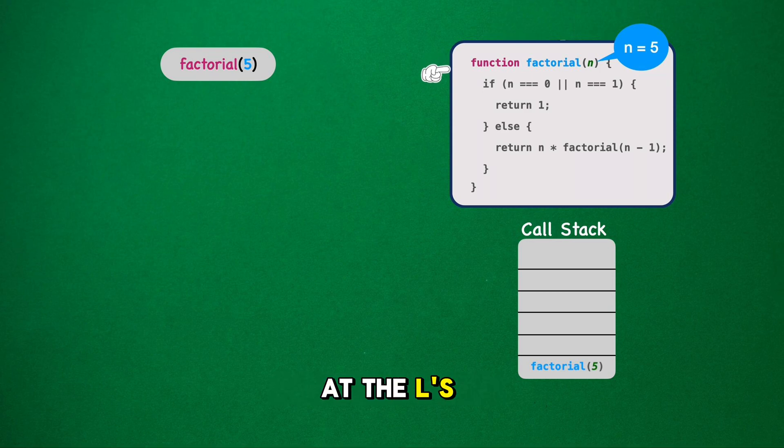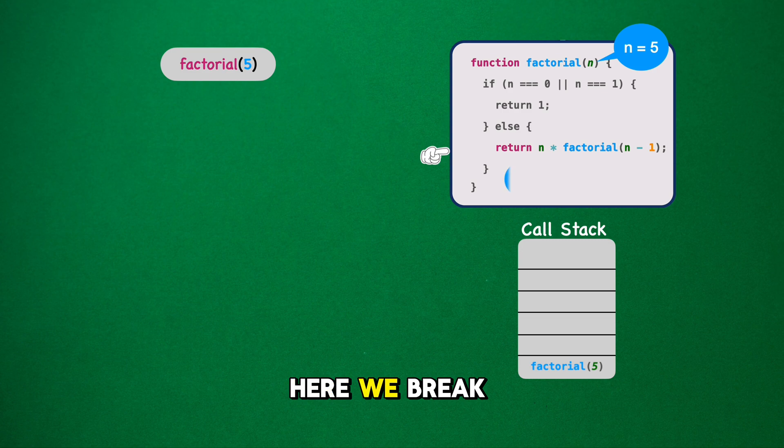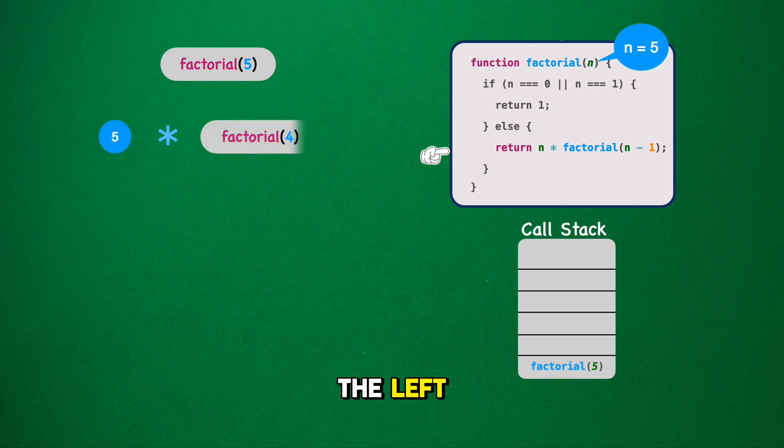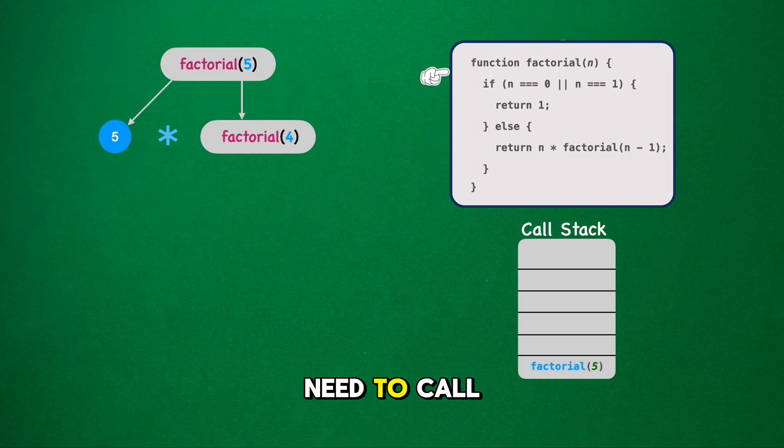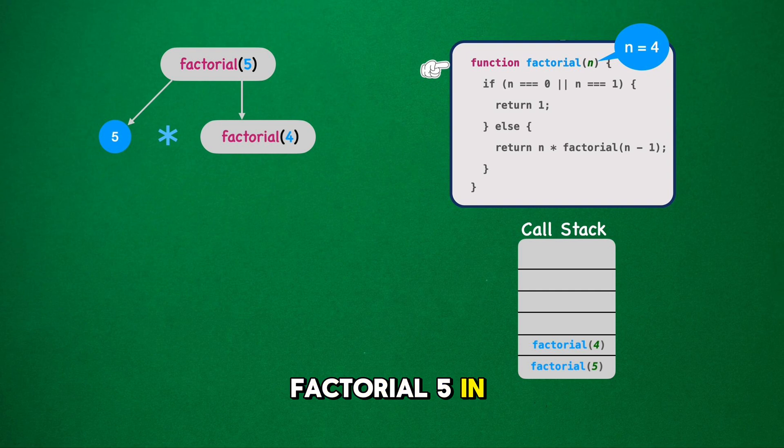Instead, we look at the else part of our code. Here we break down the multiplication, 5 asterisk factorial 4. We place the number 5 to the left, ready to multiply by the result of factorial 4, which we now need to call. Now we call factorial 4, as the next step in our recursion. We add this call to our visual board on top of factorial 5 in the call stack.